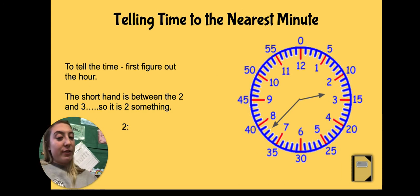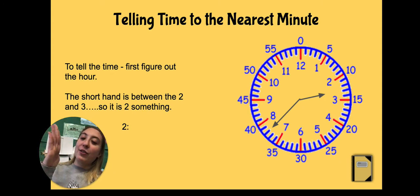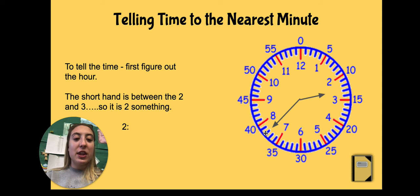So it's 2 something. But we also need to look at the long hand. So now we need to look for the minute. I see it's in between the 7 and the 8. And I know if I skip count by fives all the way to 7, that's 35. And once I get close, I can count the individual marks. So 35, 36, 37, 38. So I would say 2:38.